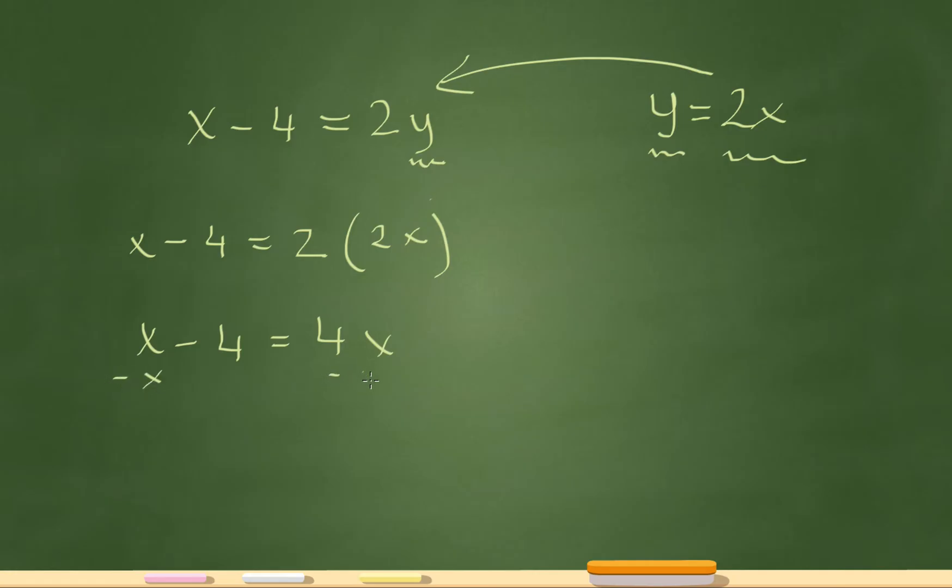And then I'll subtract my x here, subtract my x here. I'm left with negative 4 equals 3x. And then we'll divide both sides by 3 and that'll leave me with x equals negative 4 over 3. That's my final answer.